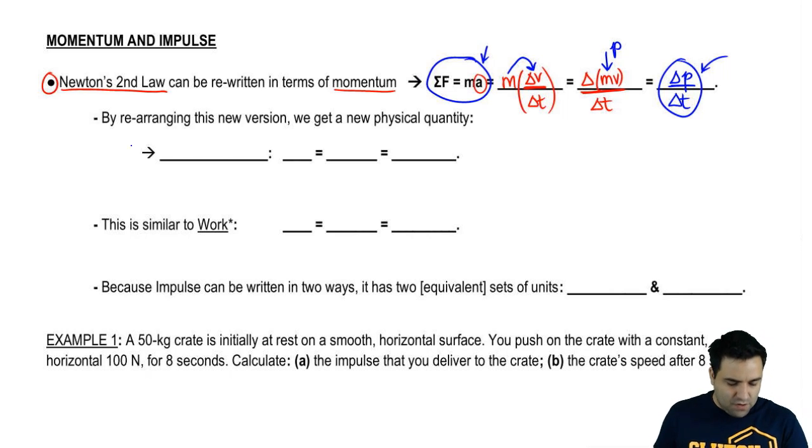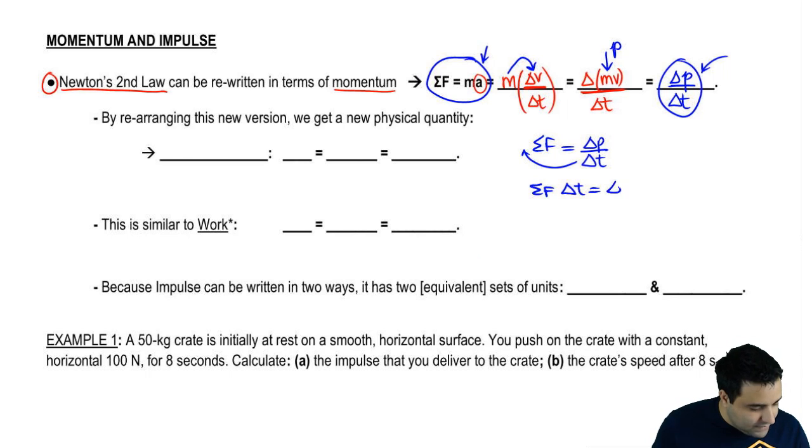So by rearranging this new version, F = delta p over delta t, we get a new physical quantity. Let me show you. Sum of all forces equals delta p over delta t. And what I'm going to do is move the delta t over here. So it's going to look like this: sum of all forces times delta t equals delta p.